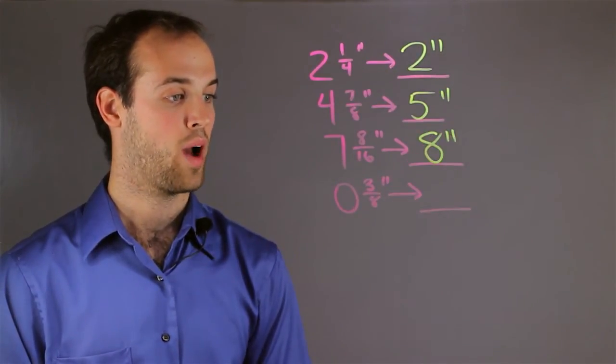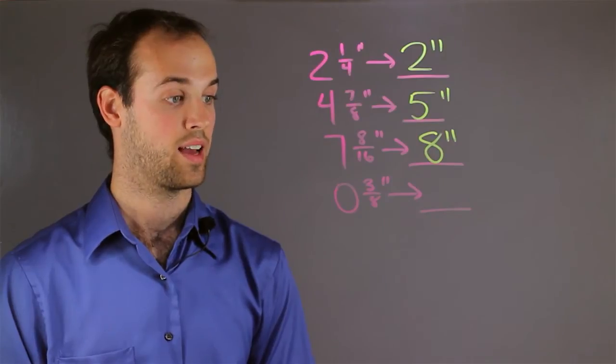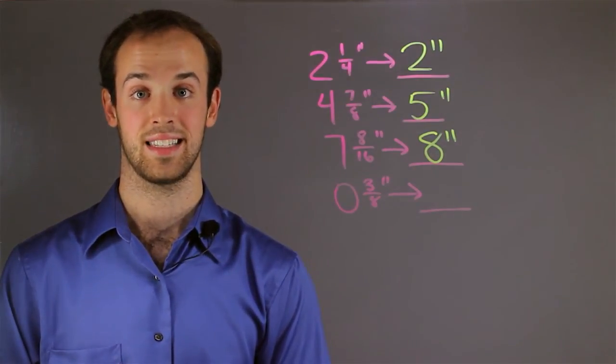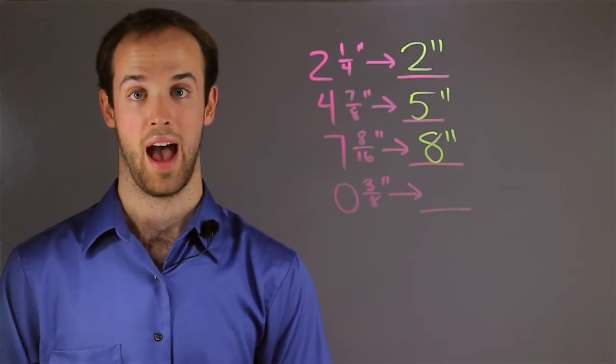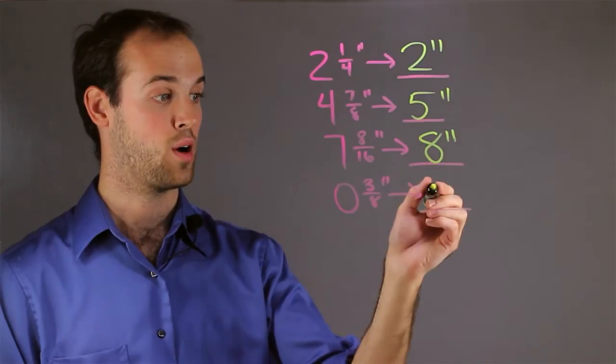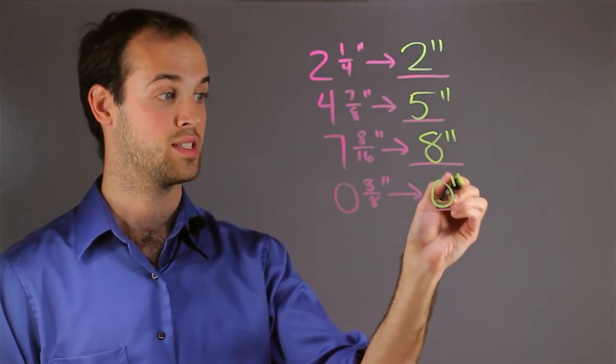And next, I have zero and three eighths of an inch. Again, we want to look at the fractional part and I see that three eighths is less than half, because four eighths would be half. So this rounds down. And since it's zero, it actually rounds down to zero.